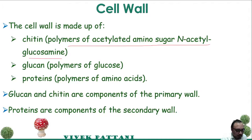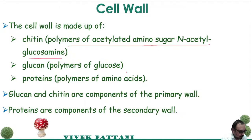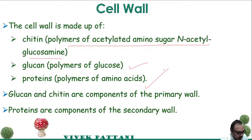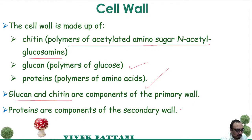Chitin is an important component of the cell wall of fungi and is also used for identification purposes, to differentiate between fungi and plants. The second component present in the cell wall is glucan. Chitin and glucan are components of the primary cell wall, whereas proteins are components of the secondary cell wall. The secondary cell wall is basically made up of mannoproteins.